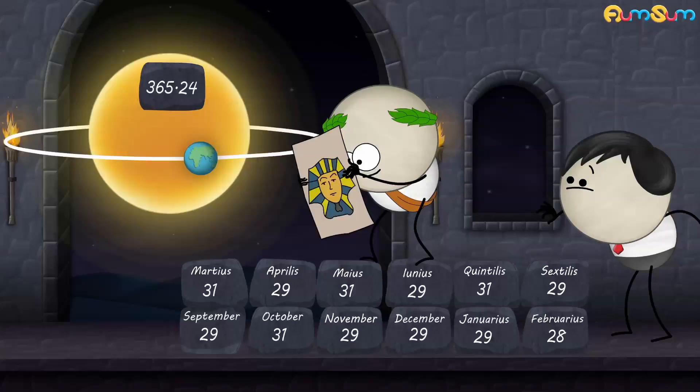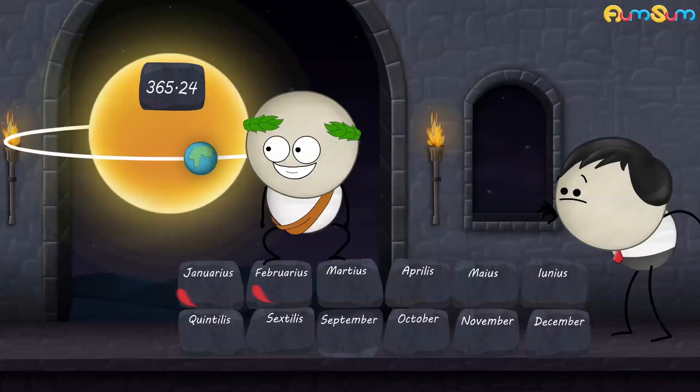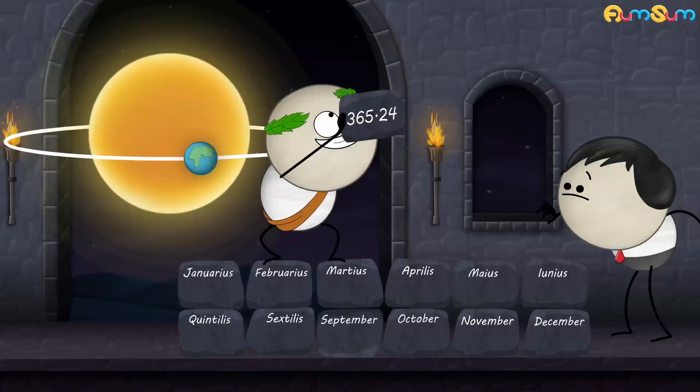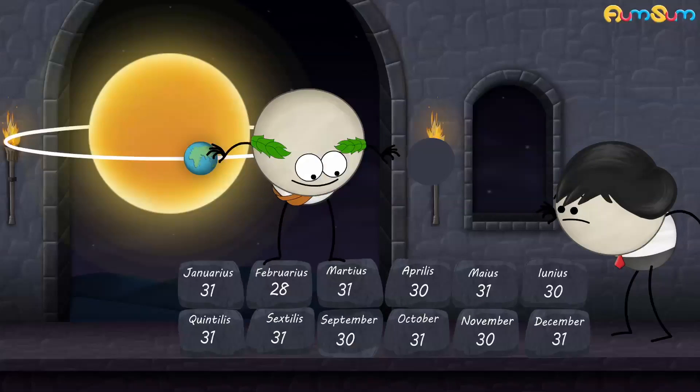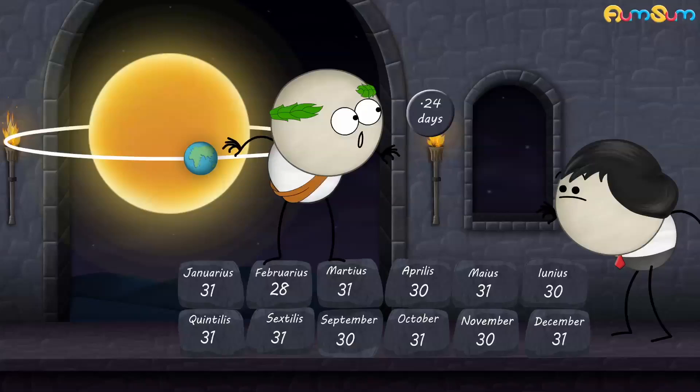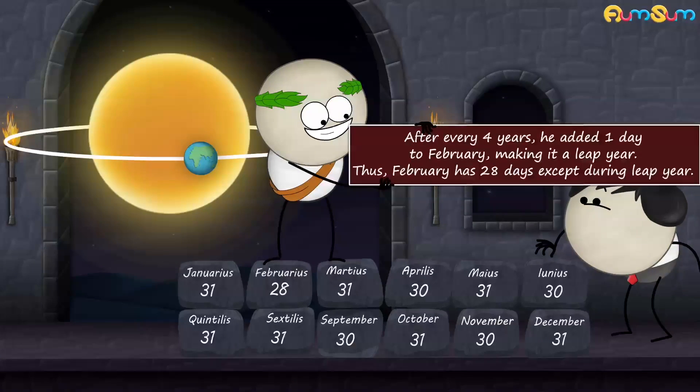Then came Julius Caesar who decided to follow the solar calendar of the Egyptians that had Januarius and Februarius in the beginning. He made the calendar into 365 days by adding days in each month except February. As still, 0.24 days were pending each year. After every 4 years, he added 1 day to February, making it a leap year. Thus, February has 28 days except during leap year.